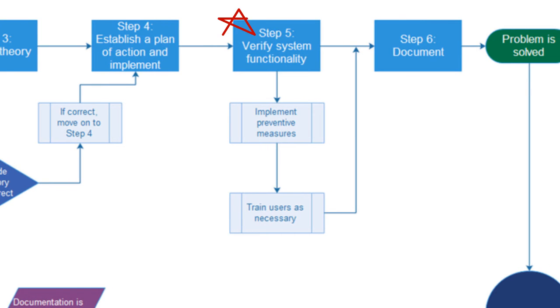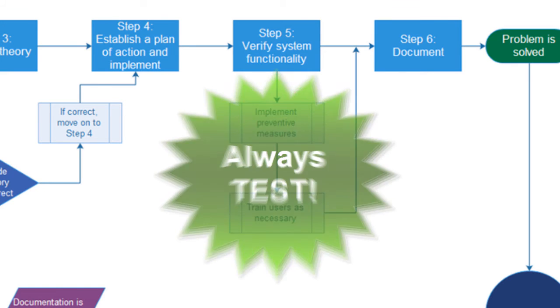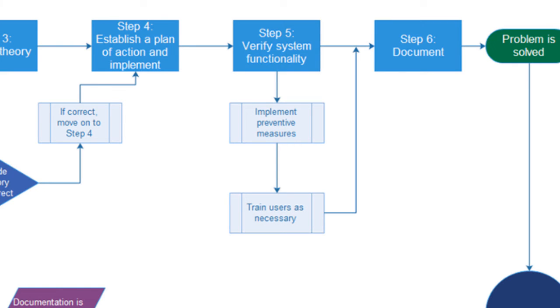That brings us to step 5, where you verify system functionality. This is the second most important thing on the list here, in my opinion. You've got to test. Test everything you do. I don't care if it's an installation, a configuration, a troubleshooting, a problem, whatever. You've got to test it. Otherwise, you could be caught with egg on your face. You don't want that. So, you've got to test.